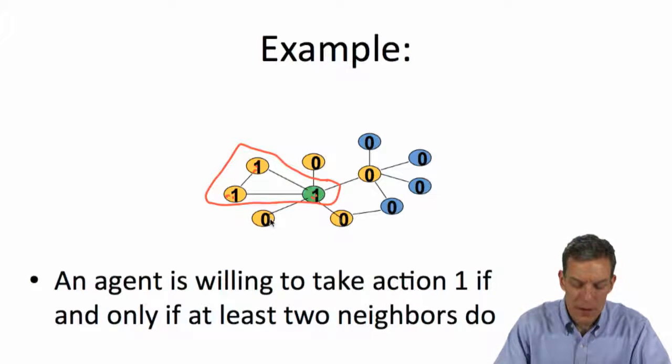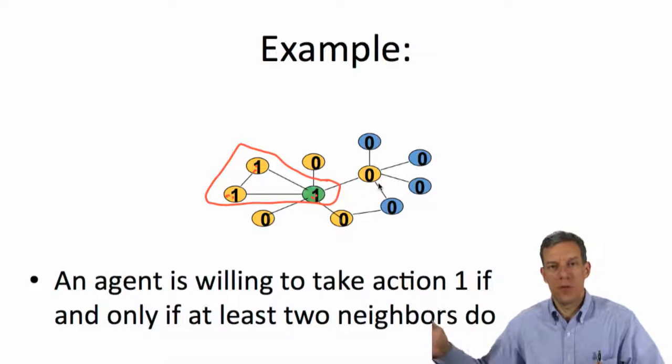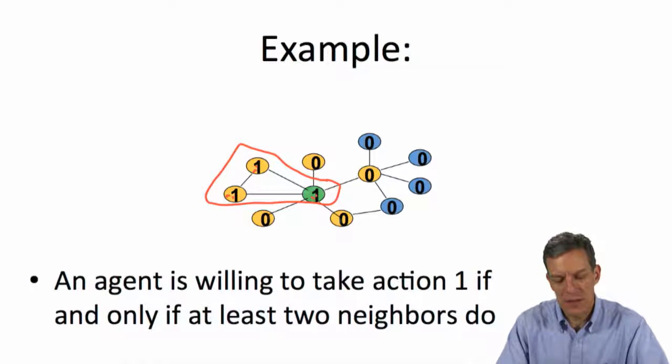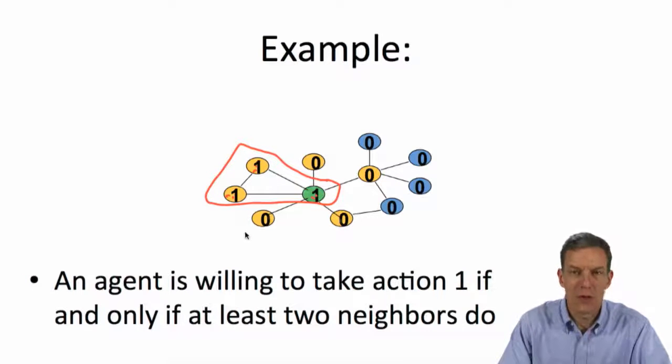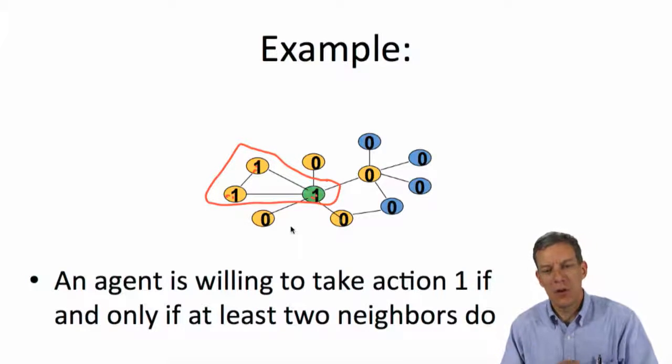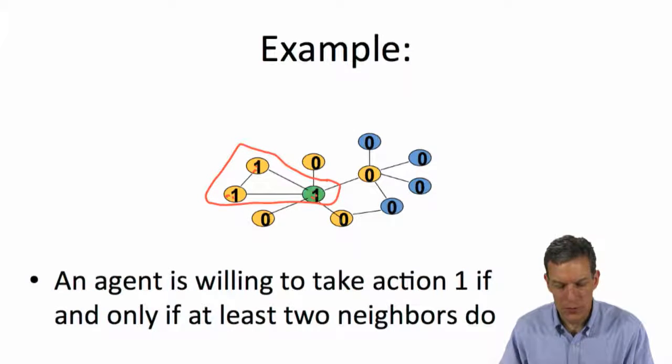Now, if these are the only people adopting, then nobody else actually wants to do it because all the other individuals still have, at most, one friend who did it, so nobody else is above their threshold, and indeed it's still an equilibrium for these three people to do it and nobody else to do it. So nobody else wants to take the action because none of the other people have two neighbors who do.